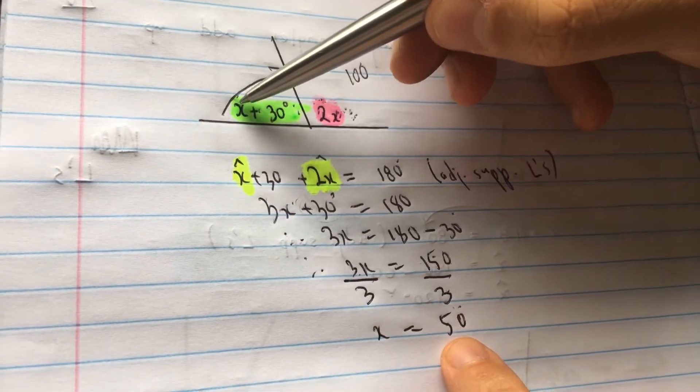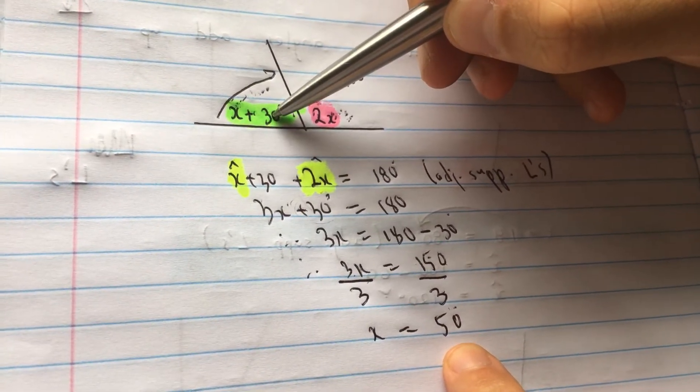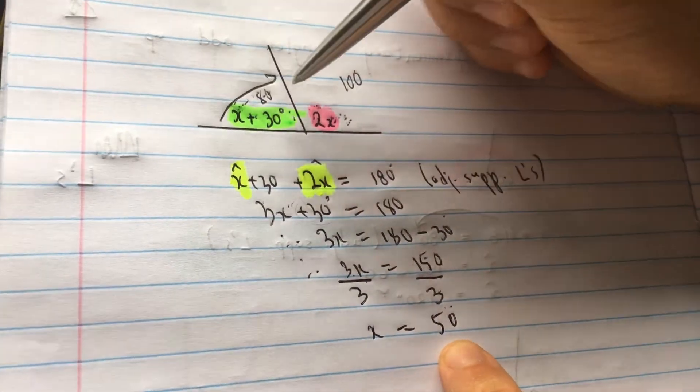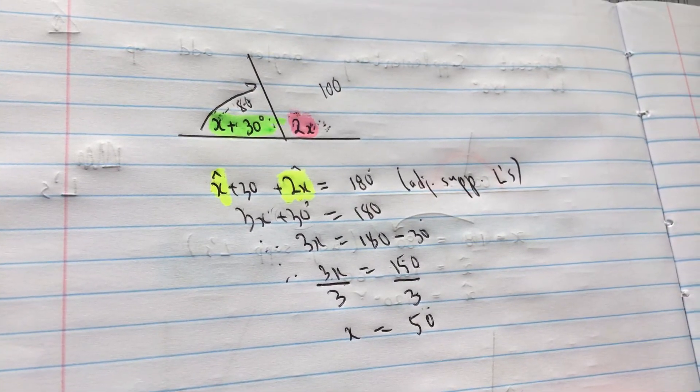Let's put the x in here. So 50. So the x is 50. So we can put 50. 50 plus 30 is how much? 80. So 80 and 100. Does that give me 180? So I know I'm right. So you can even check yourself. That's why I love geometry as well.